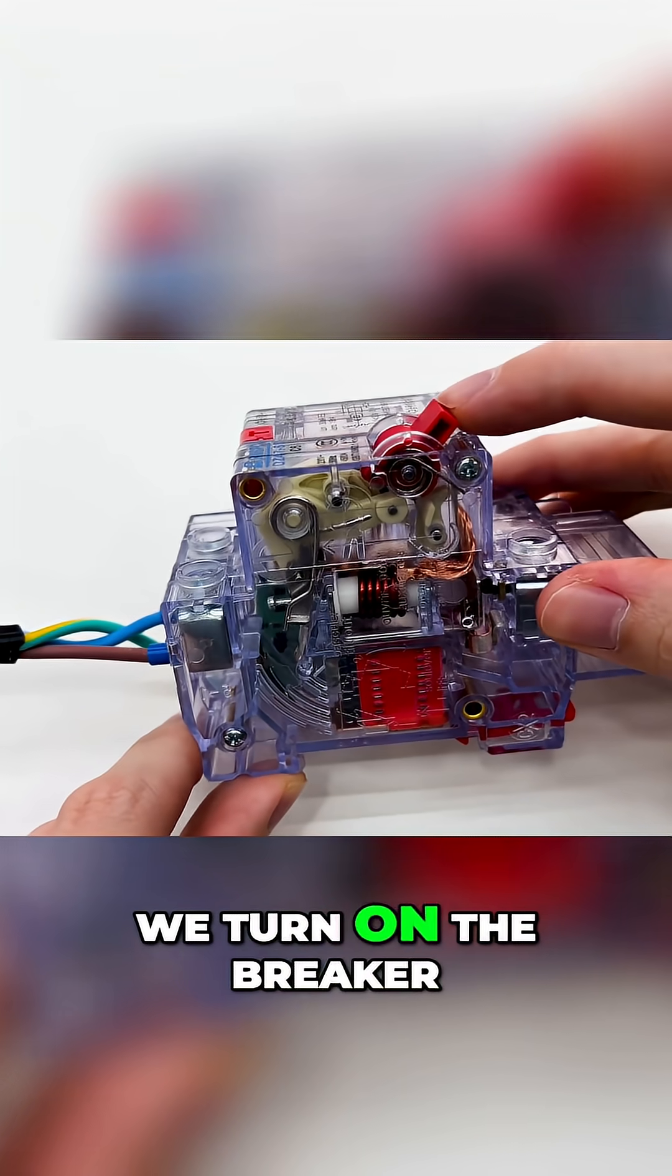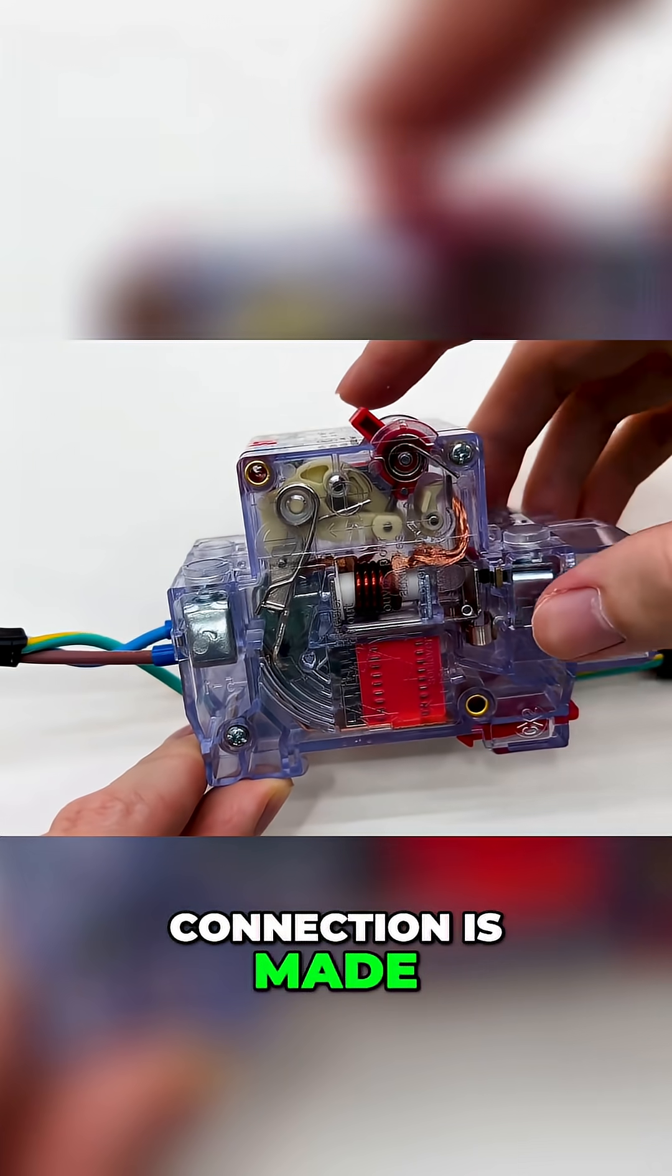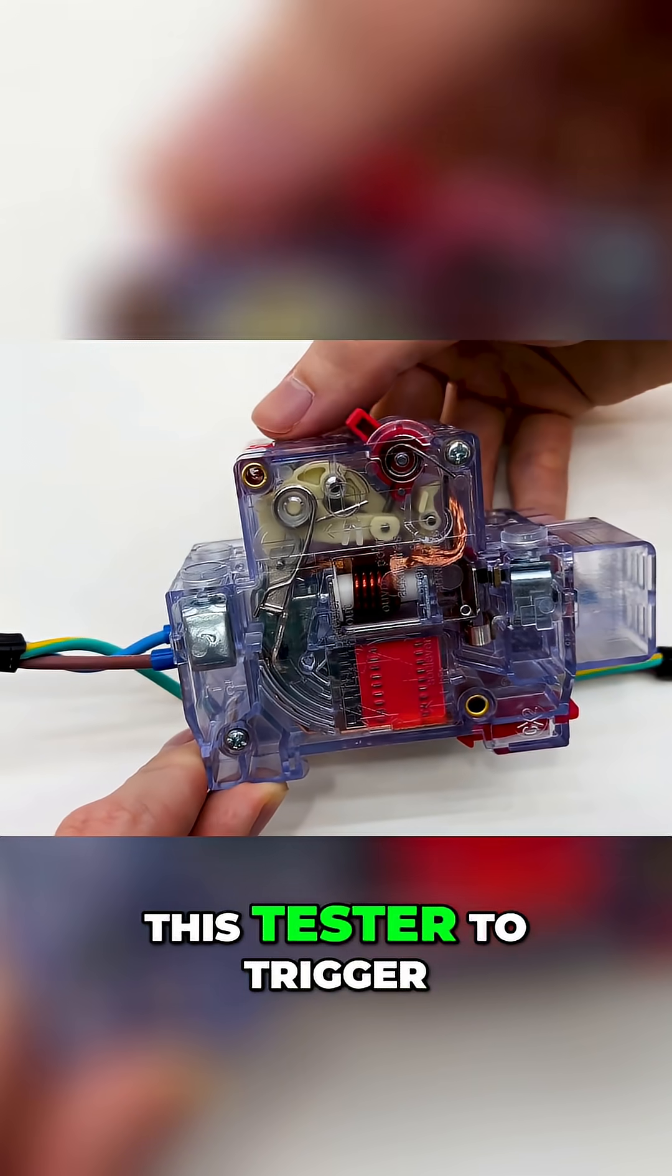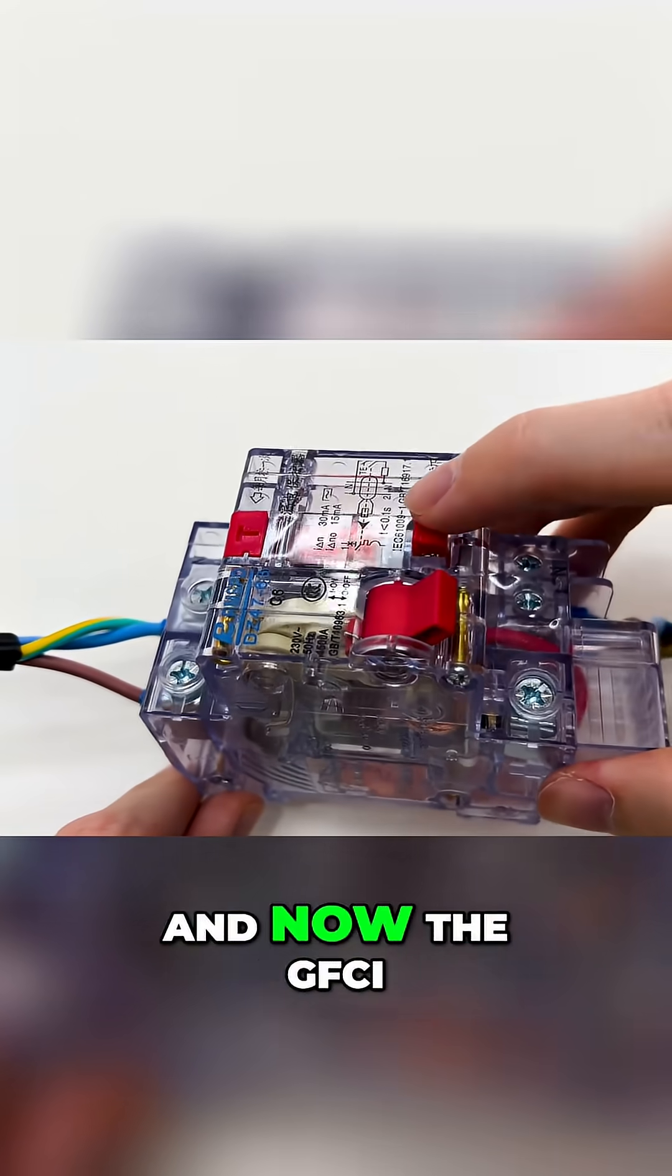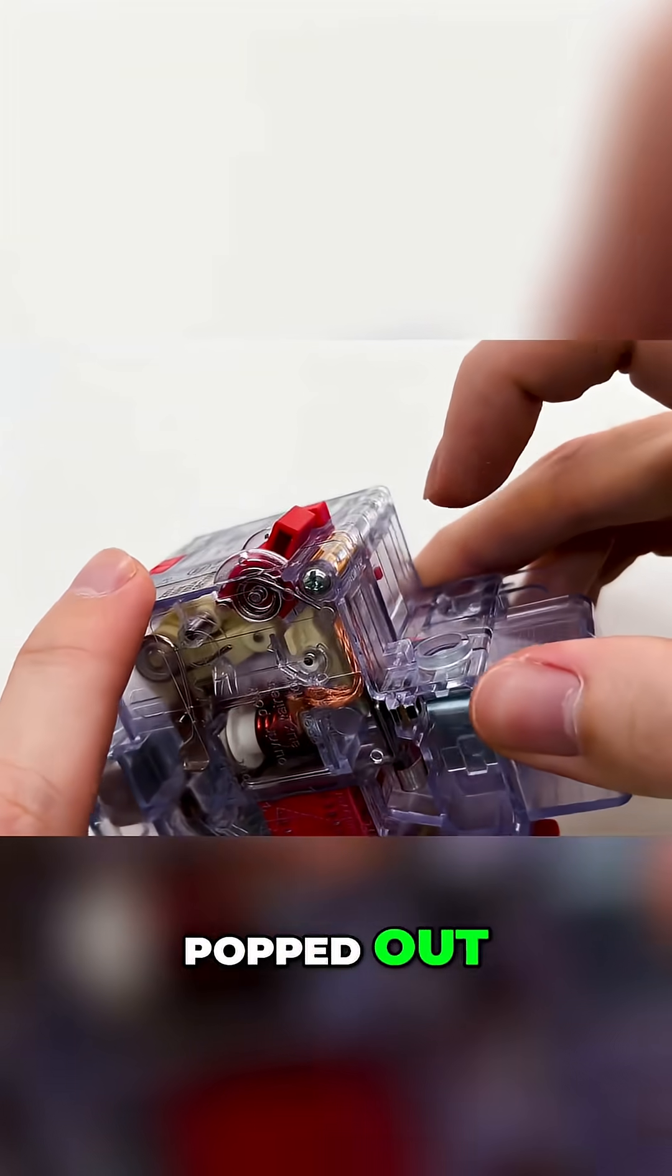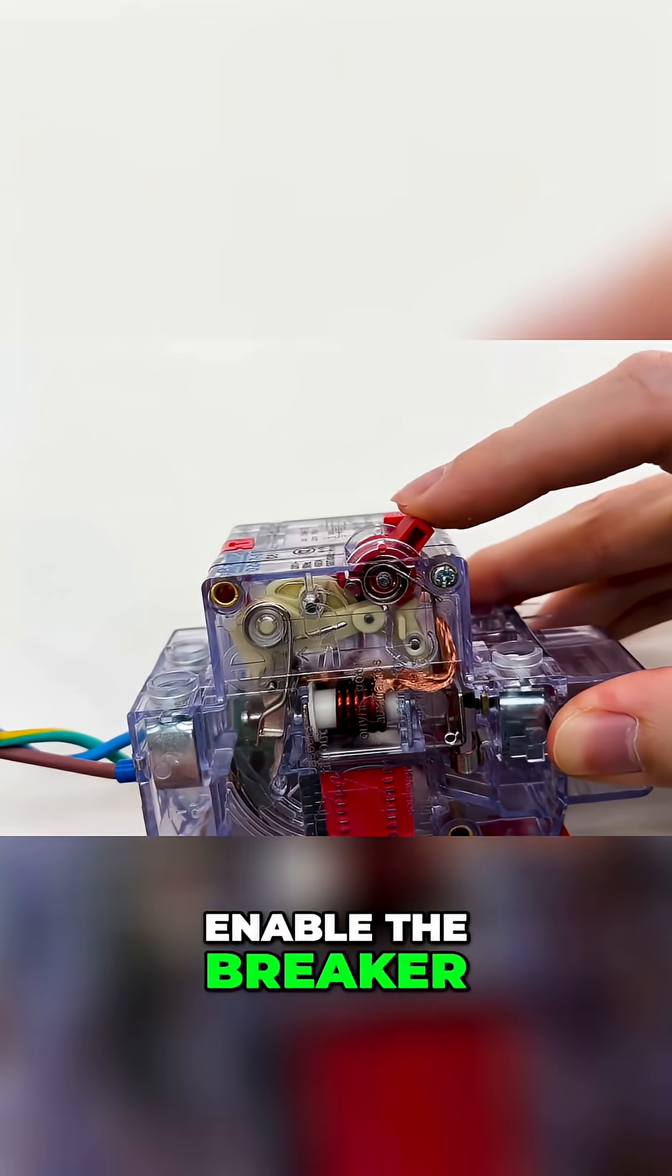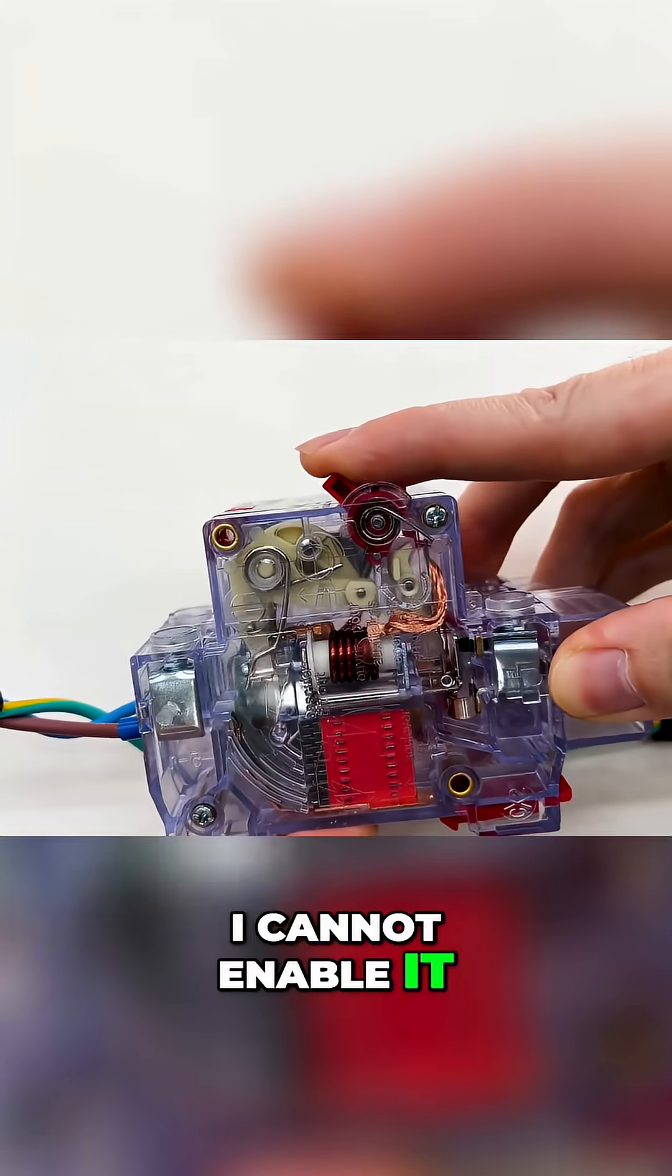We turn on the breaker, connection is made, and I will use this tester to trigger the breaker. You can see it shut down and now the GFCI popped out. Now when I try to enable the breaker I cannot enable it.